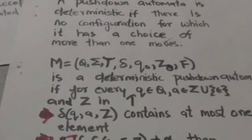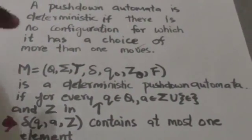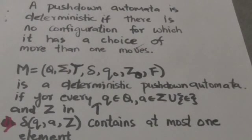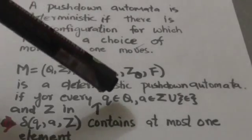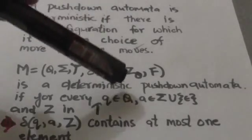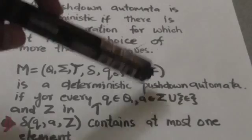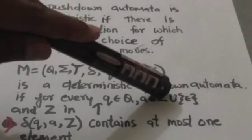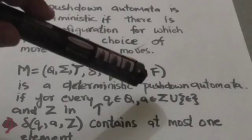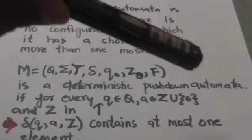Suppose there is a pushdown automata M described by this seven-tuple. Then M is a deterministic pushdown automata if for every state q and for every symbol a, where a is either an input symbol or an empty string,